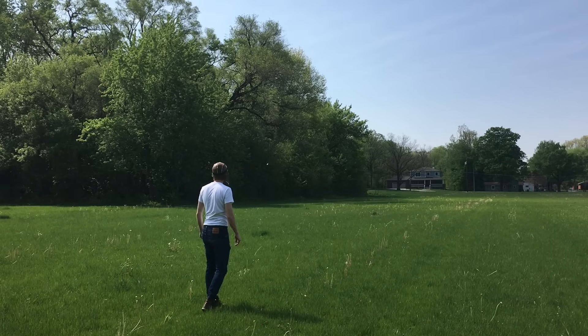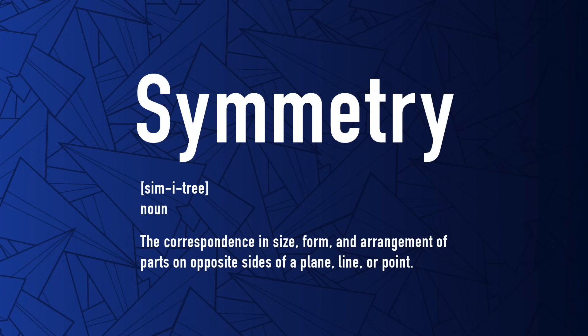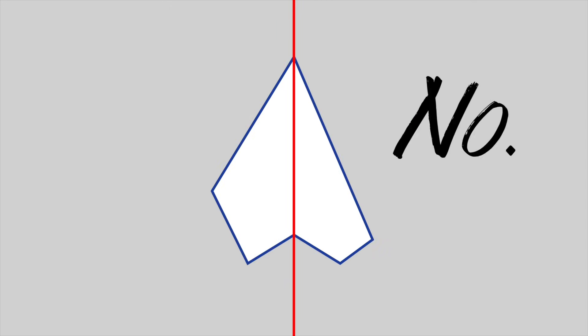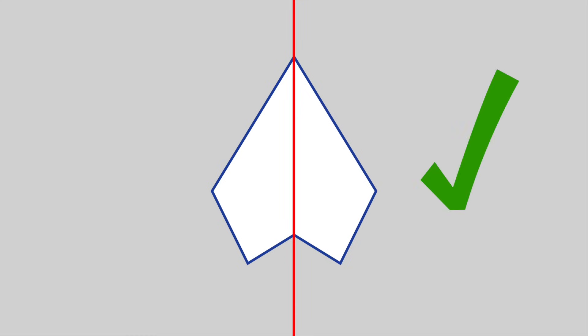But there's something we should talk about first. If your plane isn't flying well, the very first thing you should consider is symmetry. Ask yourself: does the left half of my plane look like the right half? If the answer is a definite no, then that's almost certainly your problem. For a plane to perform at its best, it needs to be symmetrical.